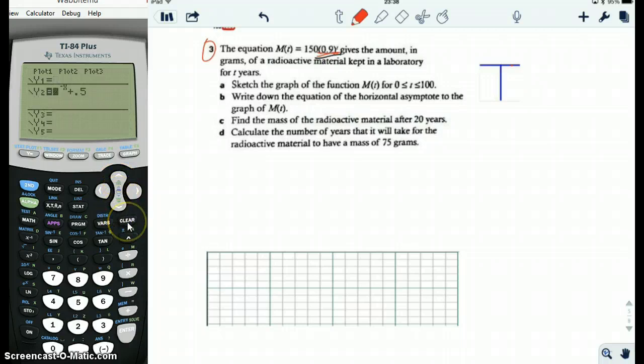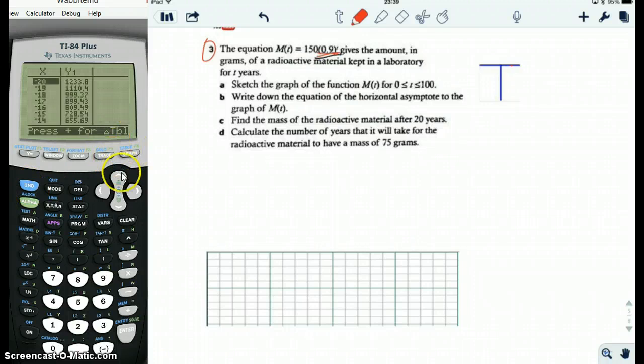I'm just clearing out all these equations. And then we're going to put in this function 150(0.9)^x. They say t, but we have to use x because we're using the calculator. We're graphing, but we're probably better off looking at the table. So here's the table. We're more interested at t equals 0 and beyond. So we'll go to x equals 0.